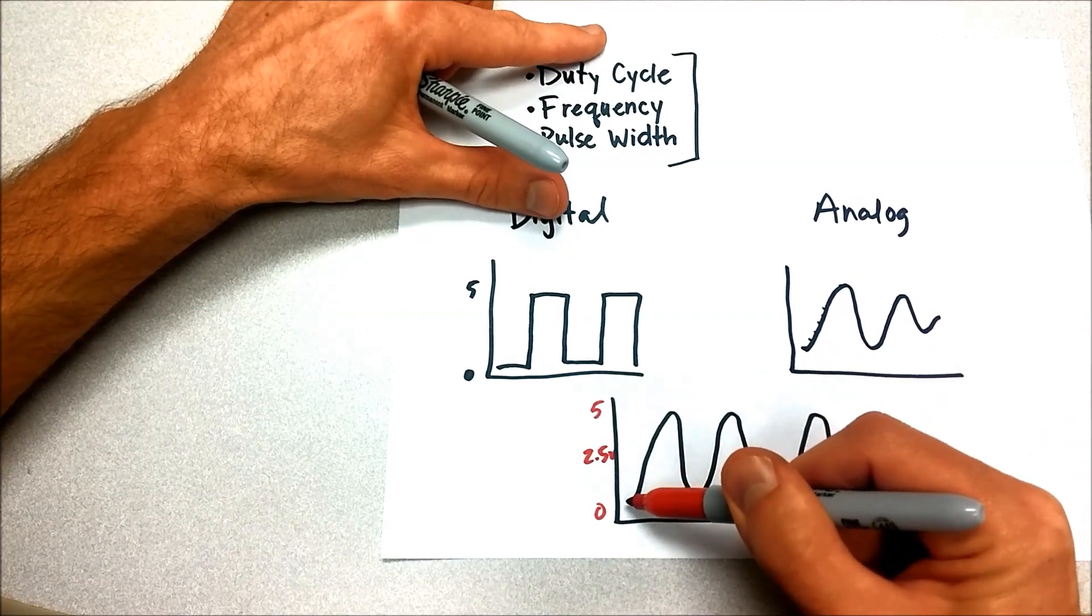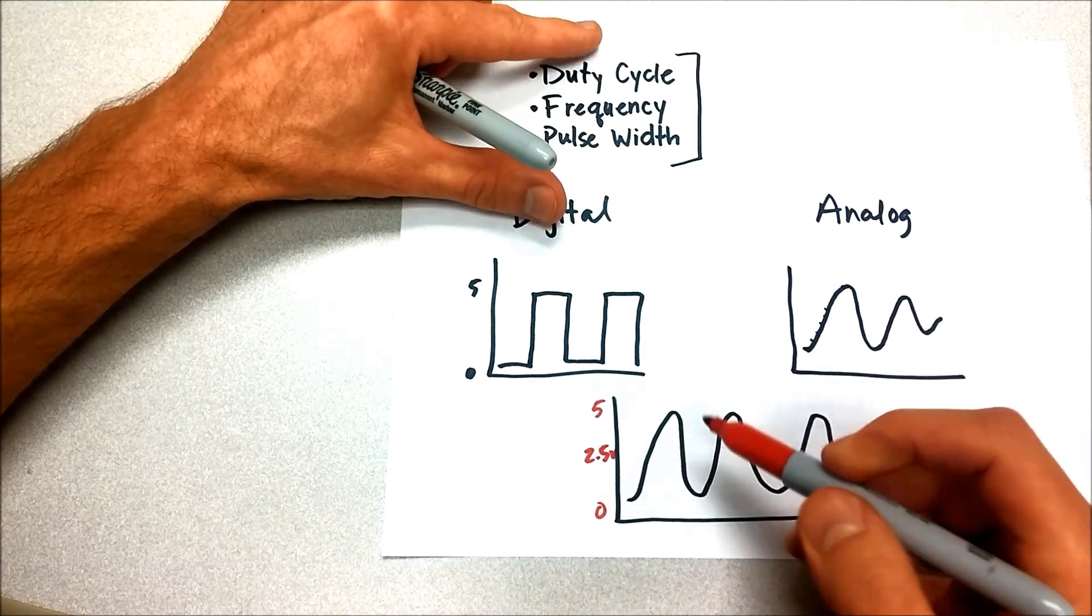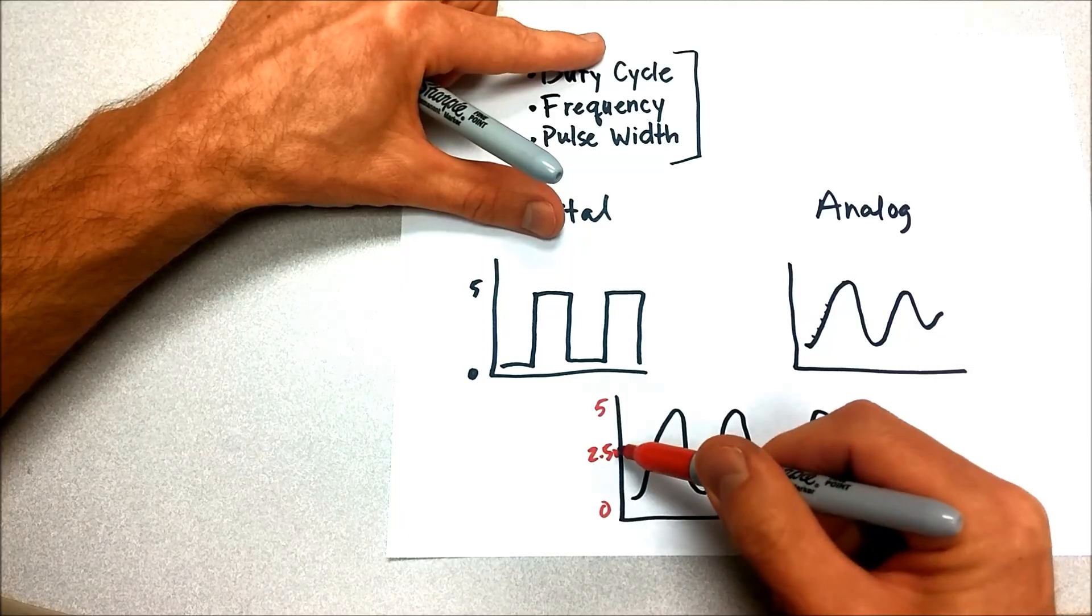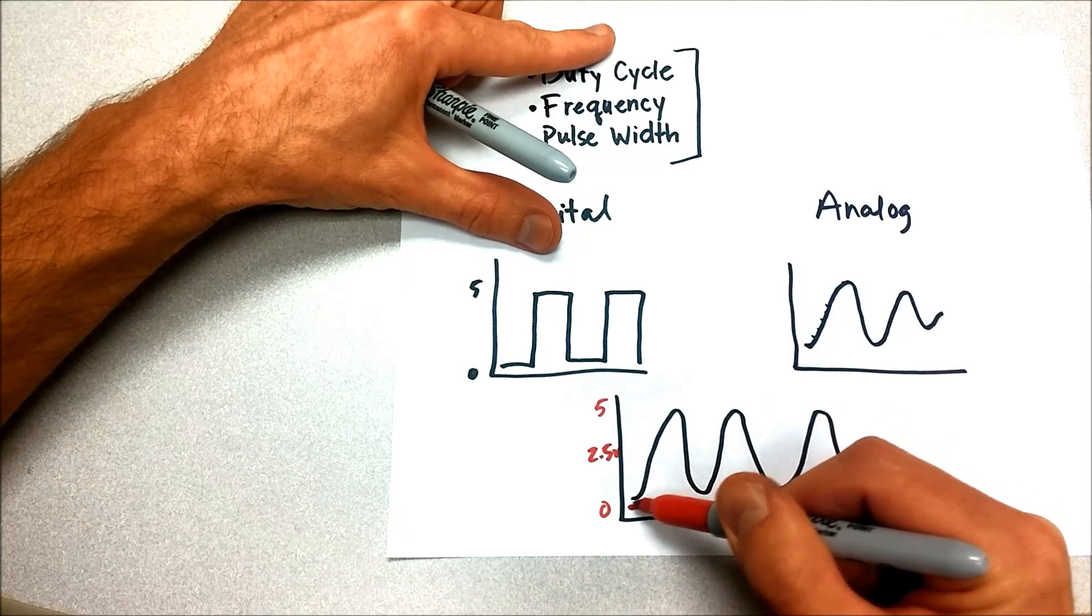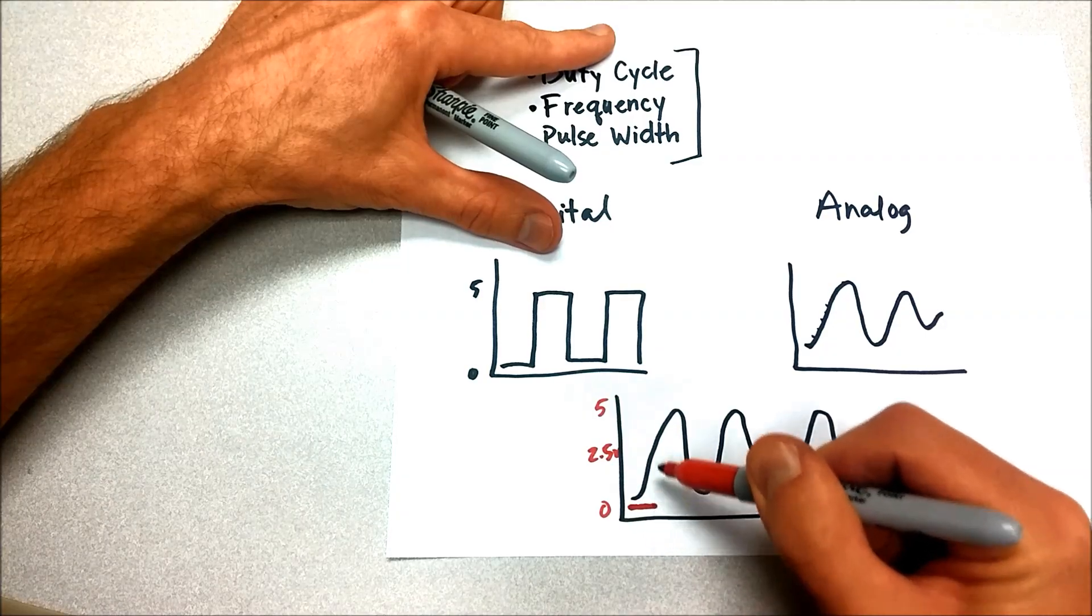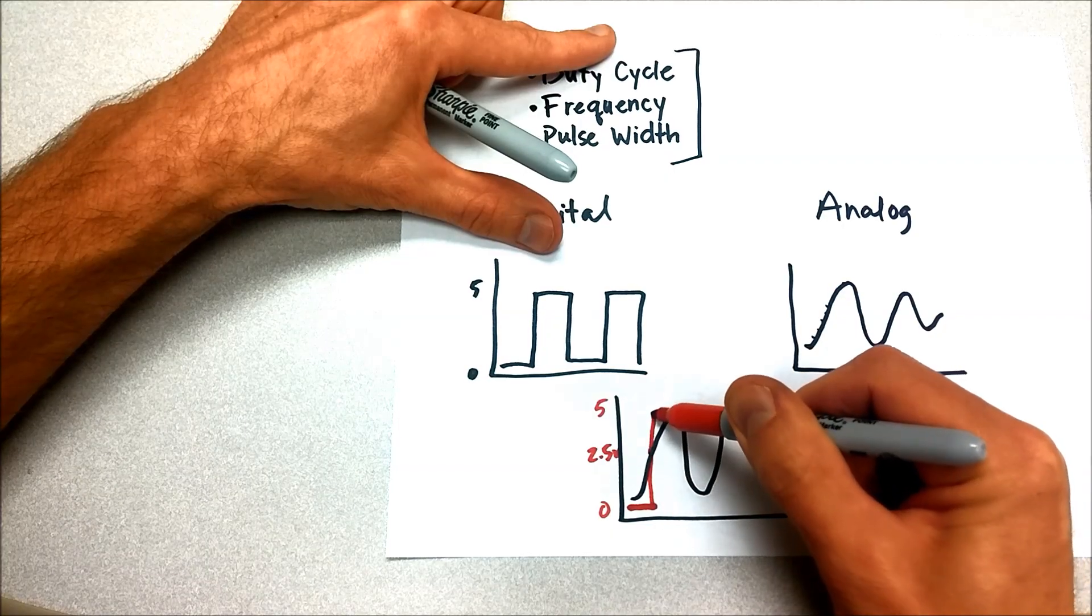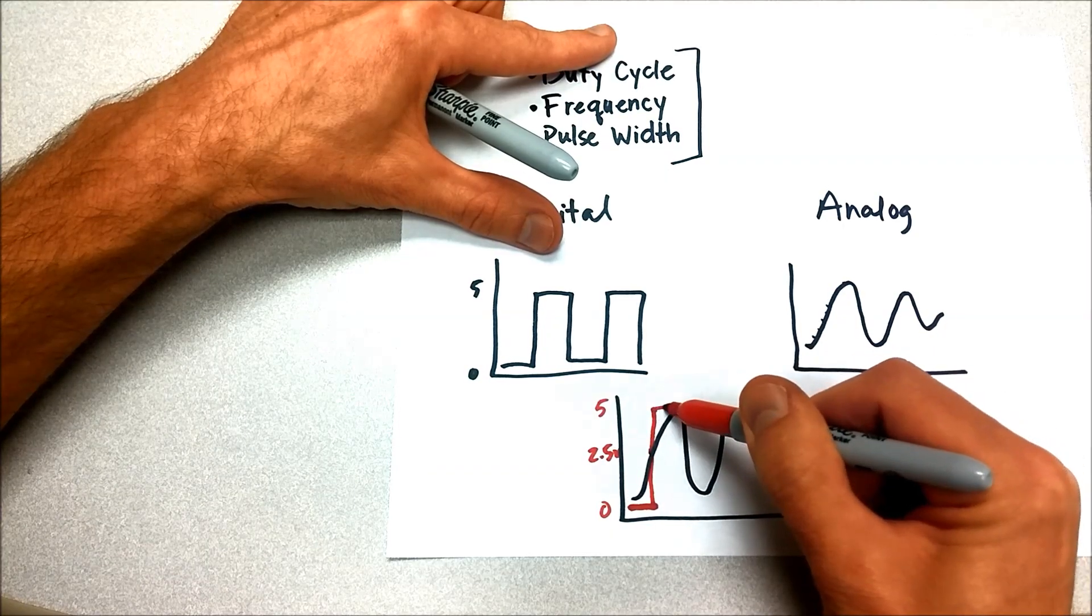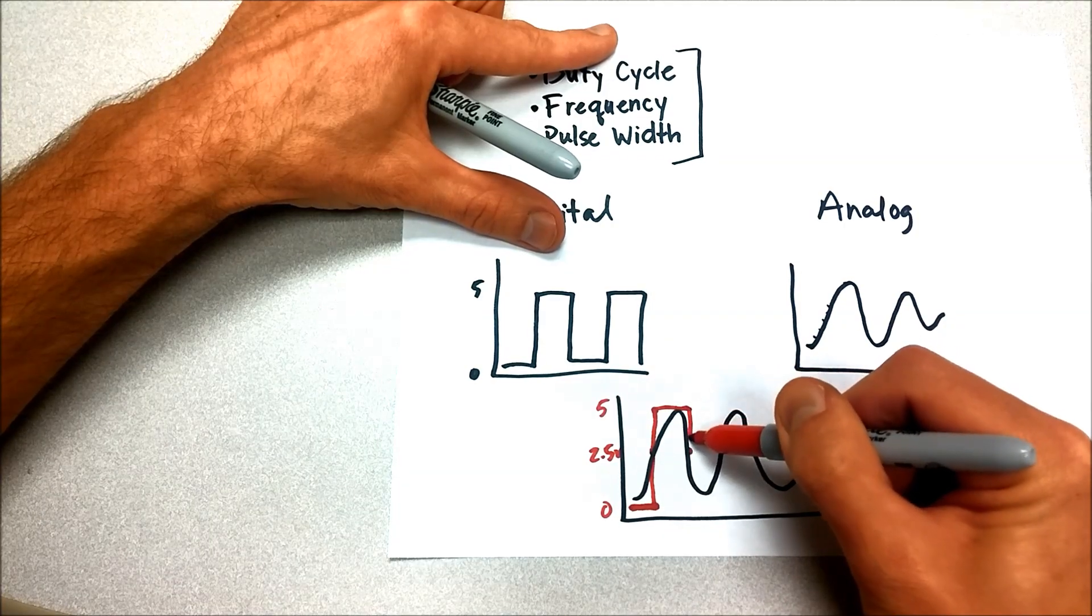What happens is, as this signal goes into the analog to digital converter, it monitors it. And as long as the voltage is below two and a half volts, it's considered low. So it moves along here at a low voltage until it reaches this two and a half volt point. And when it does, it immediately switches to high.